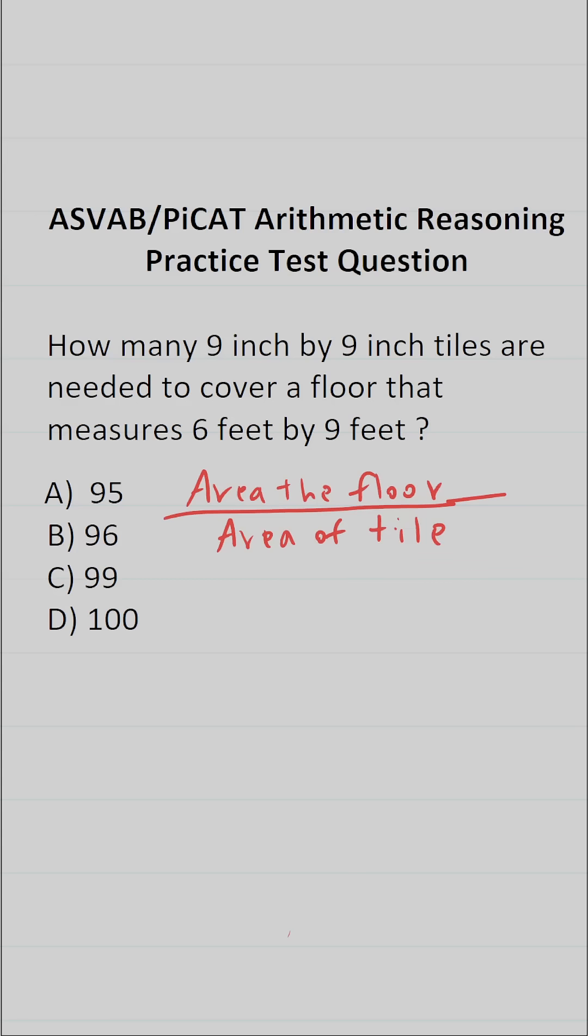What is the area of the floor? Well, we know it's a six foot by nine foot floor. What is the area of each piece of tile? It's nine inches by nine inches. So in this case, you should see that we've run into a little bit of a problem. We're given the dimensions of the floor in terms of feet, but we have dimensions for the piece of tile in terms of inches.